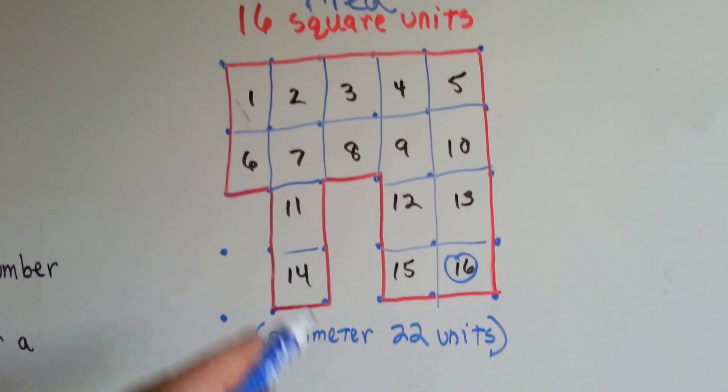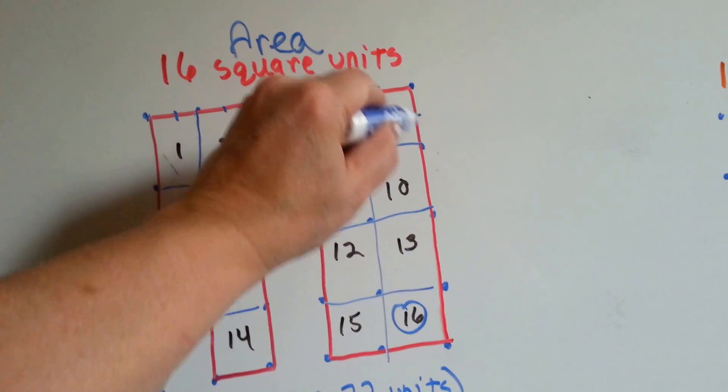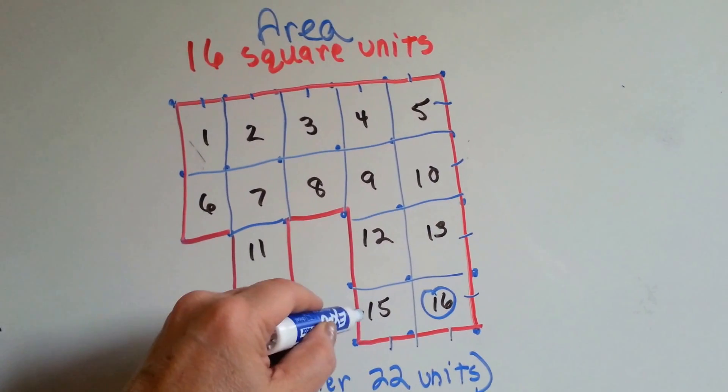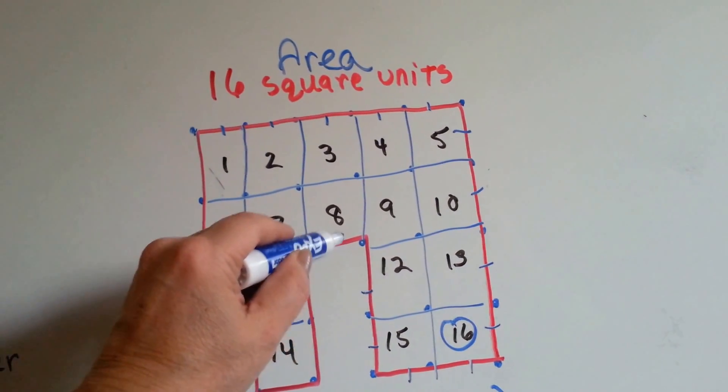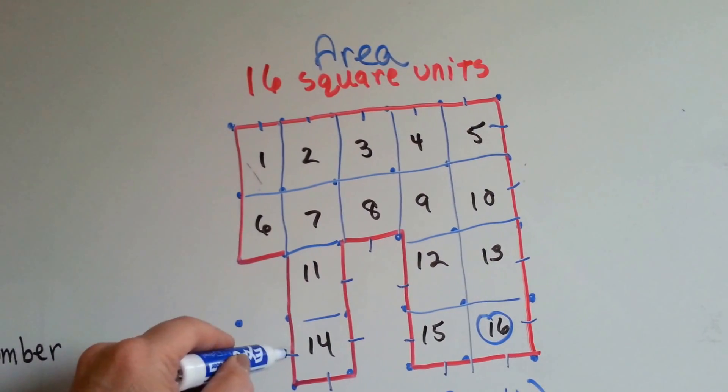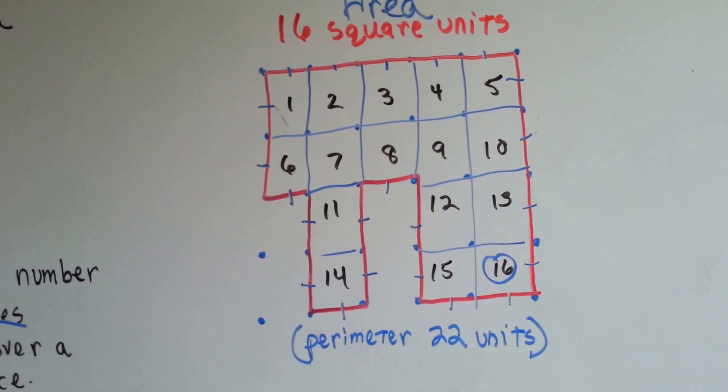Let's start counting them. Let's start up here. One, two, three, four, five, six, seven, eight, nine, ten, eleven, twelve, thirteen, fourteen, fifteen, sixteen, seventeen, eighteen, nineteen, twenty, twenty-one, twenty-two. Twenty-two units.